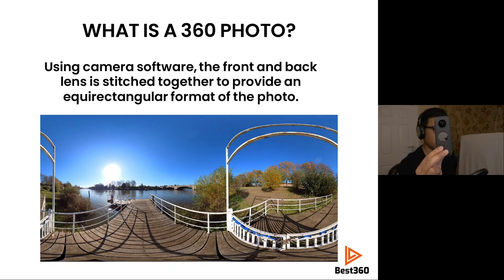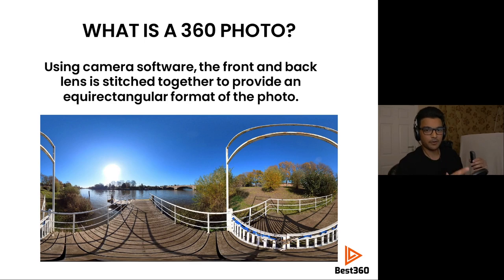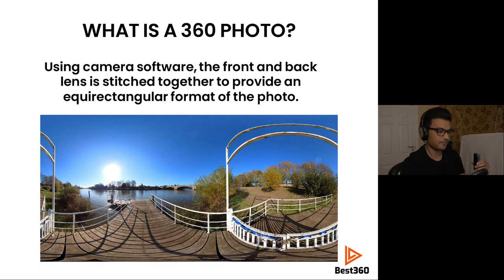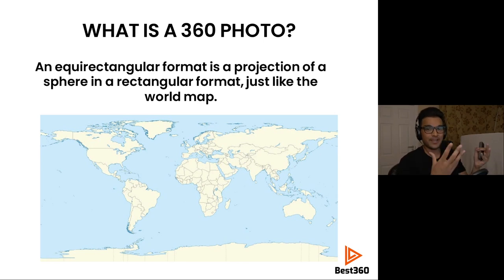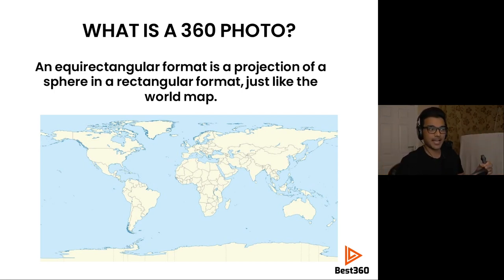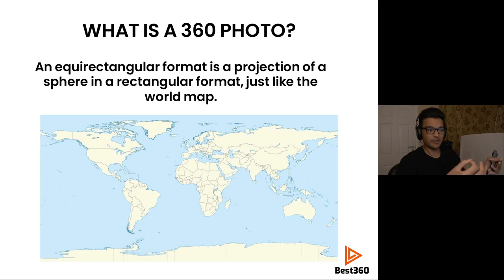You use Insta360 Studio to turn that double fisheye look into an equirectangular photo. This is the format you need to upload your 360 photos onto social media like Facebook — the format recognized by all the platforms online. Think of it like a world map: the world is round, and to represent a sphere in a rectangular format as a flat view is an equirectangular format. An equirectangular photo is just a flat way of seeing a sphere.